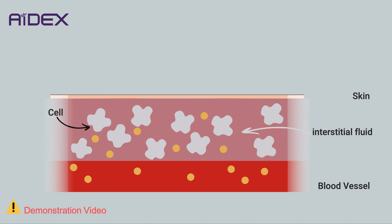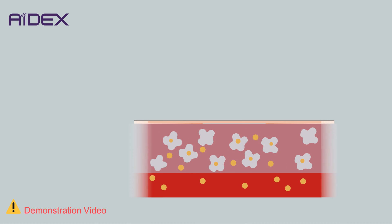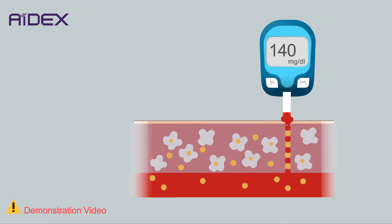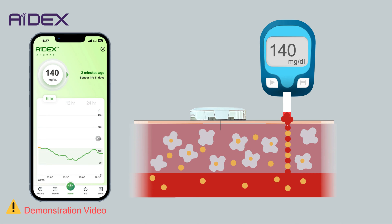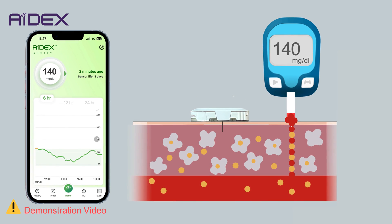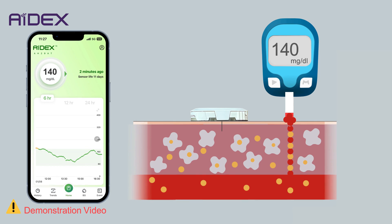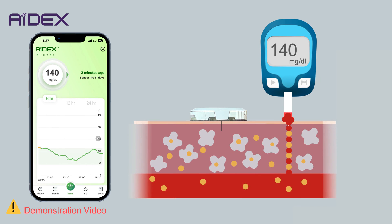However, there is a time lag of approximately 5 to 40 minutes for glucose to move from the blood vessels to the interstitial fluid. In practical terms, if we were to test blood sugar now in a blood sample and it yielded a result of 140 mg/dL, a continuous glucose monitoring device should ideally display a reading of 140 mg/dL within a maximum of 40 minutes. This is because CGM devices measure glucose levels in interstitial fluid, not directly in the blood sample.